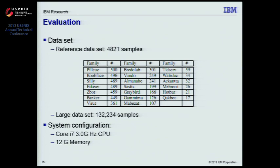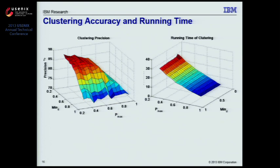We measure clustering accuracy in terms of how well the resulting clusters agree with the original labels, and also the running time of MaltonX. We vary two parameters in the clustering algorithm — Pmax and minD — and plot the results in these two figures. With proper selection of parameters, MaltonX is able to correctly cluster 80% of the reference dataset within about 20 seconds. We also observe that Pmax seems to have greater influence on running time, because a smaller Pmax means each prototype can only cover a smaller region, forcing the algorithm to find more prototypes.